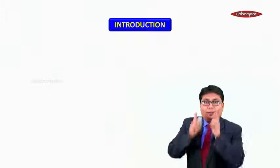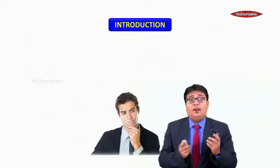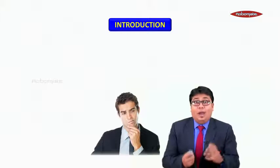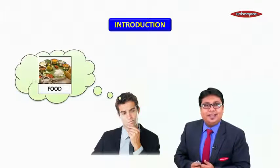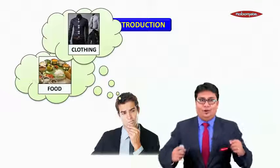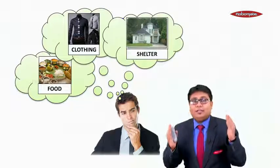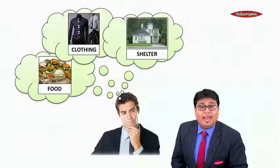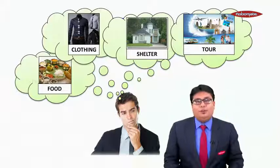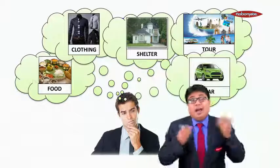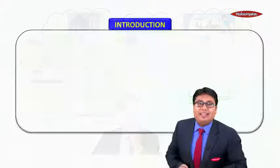Now let us study this topic with an example. As you can see on the screen, there is a man, and this man has certain wants and desires. His desires include: delicious food, good clothes and a better personality, a beautiful house to stay in, relaxation, going on a tour, and also a car.